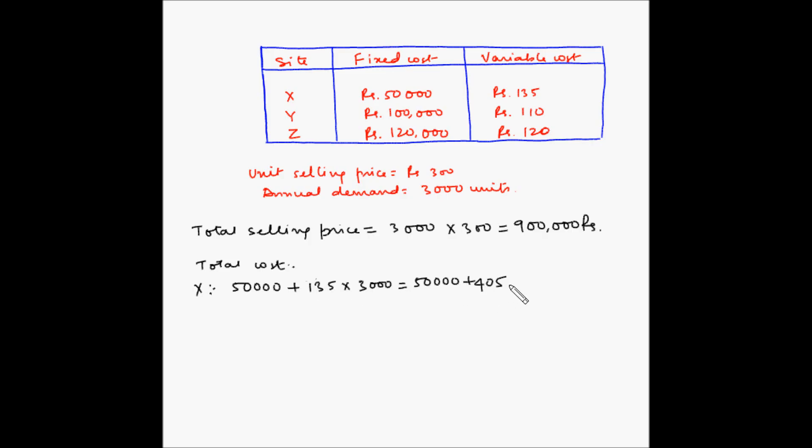For Y, 100,000 plus 110 multiplied by 3000. So 100,000 plus 330,000, and this is equal to 430,000 rupees.